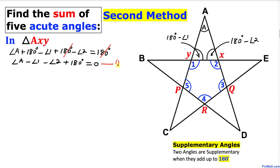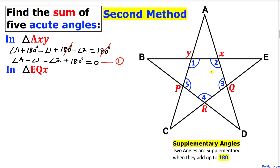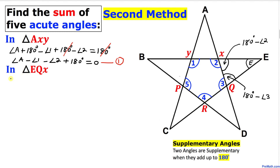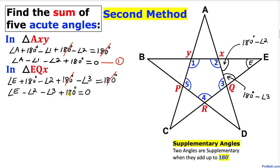Now let's focus on triangle EQX. Once again, angle E and the two other angles must add up to 180 degrees. Those two angles are supplementary to angles two and three. Writing them down: angle E plus (180 minus angle two) plus (180 minus angle three) equals 180 degrees. The 180-degree terms cancel, and after simplifying we get equation number two.